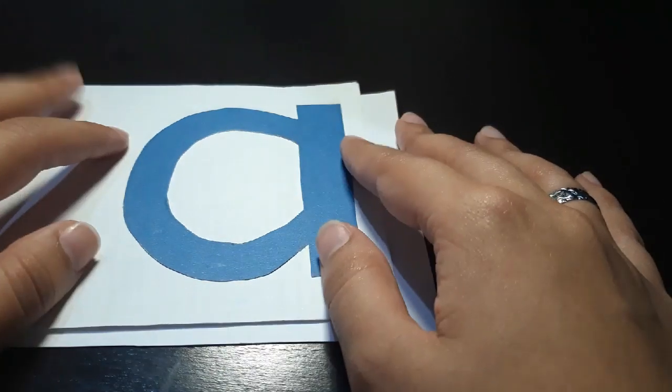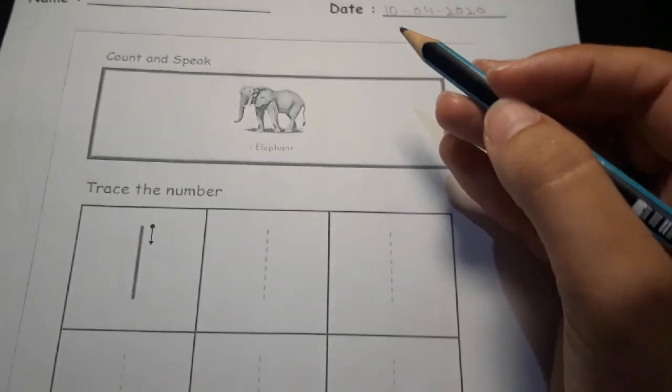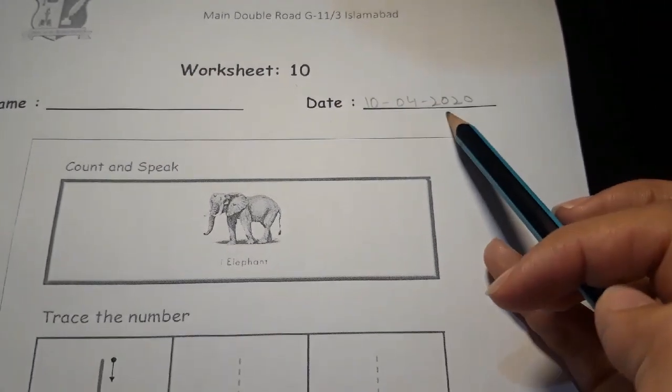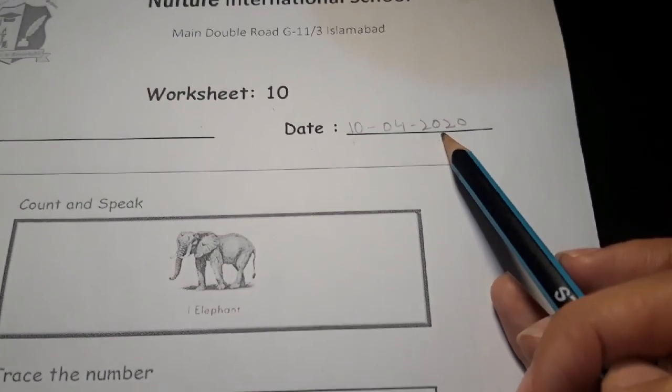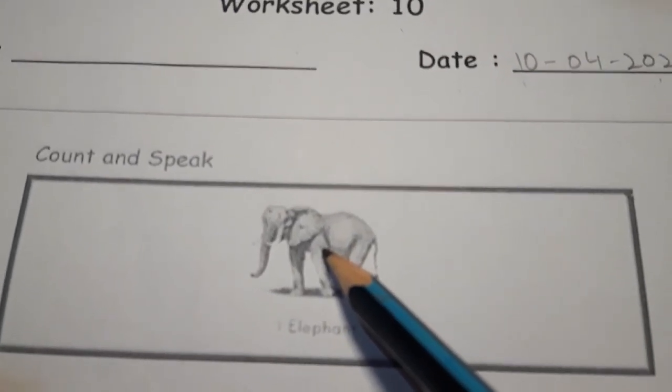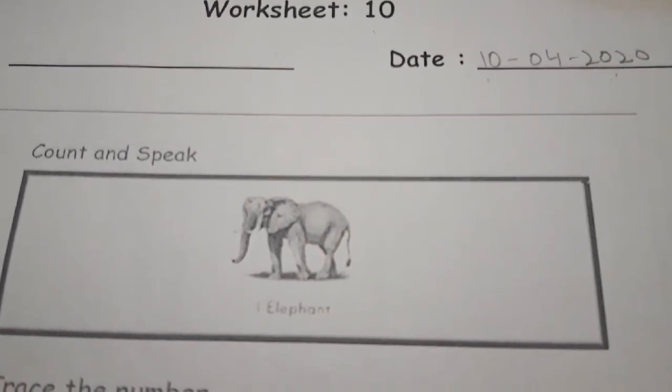So let us move toward the tracing of number one. This tracing worksheet we have is worksheet number 10. Please write down the date, which is 10th of April 2020. How many elephants are here? There is only one elephant.